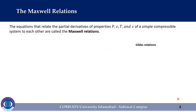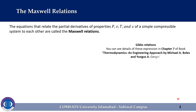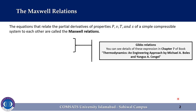Students can see the details of Gibbs relations in Chapter 7 of the book Thermodynamics and Engineering Approach by Michael A. Boles and Yunus A. Cengel. However, two properties of the Gibbs relations can be expressed as: du is equal to T ds minus p dv, and the second expression is dh is equal to T ds plus v dp. Here, u symbolizes the internal energy, T represents the temperature, s is entropy, and p and v are the pressure and specific volume.